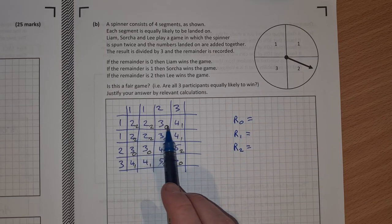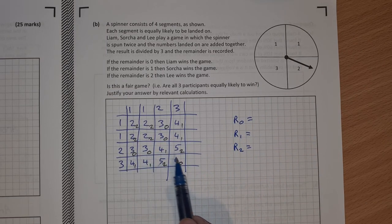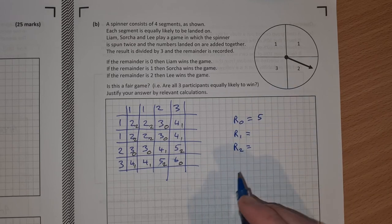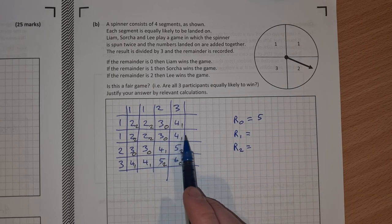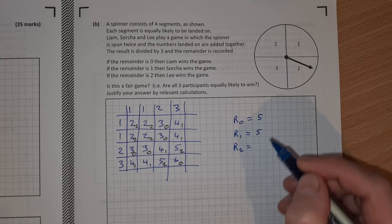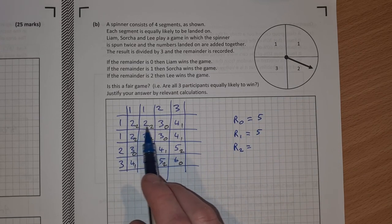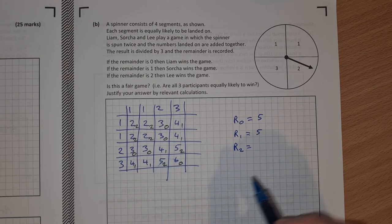How many 0's are there? Just count them up. We've 1, 2, 3, 4, 5. How many remainder 1's? We've 1, 2, 3, 4, 5. And how many remainder 2's? 1, 2, 3, 4, 5, 6.